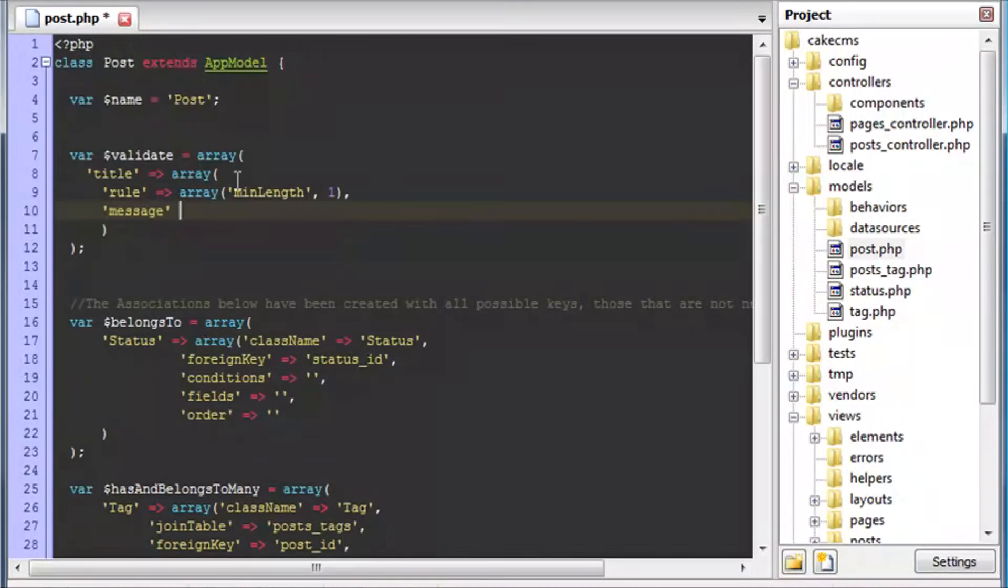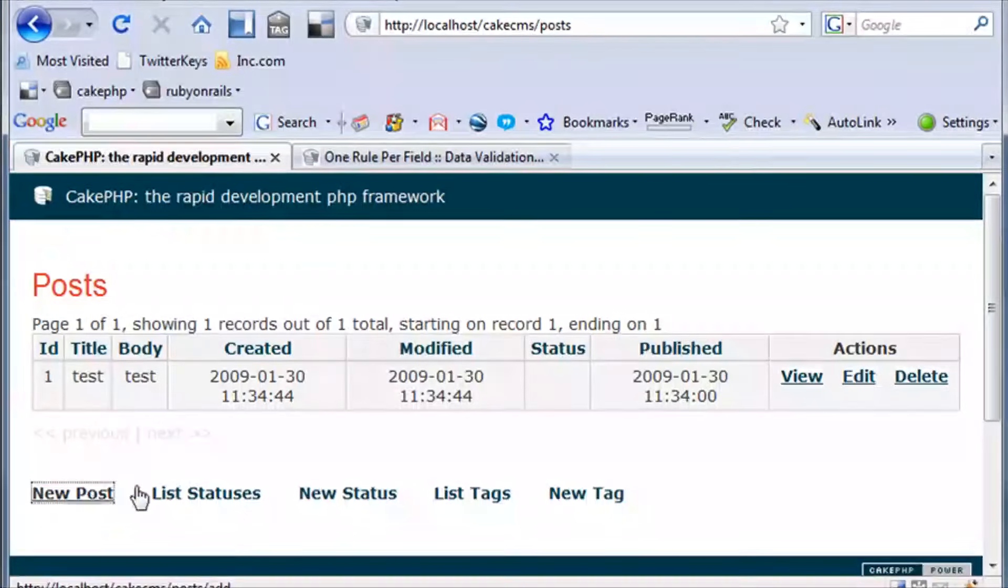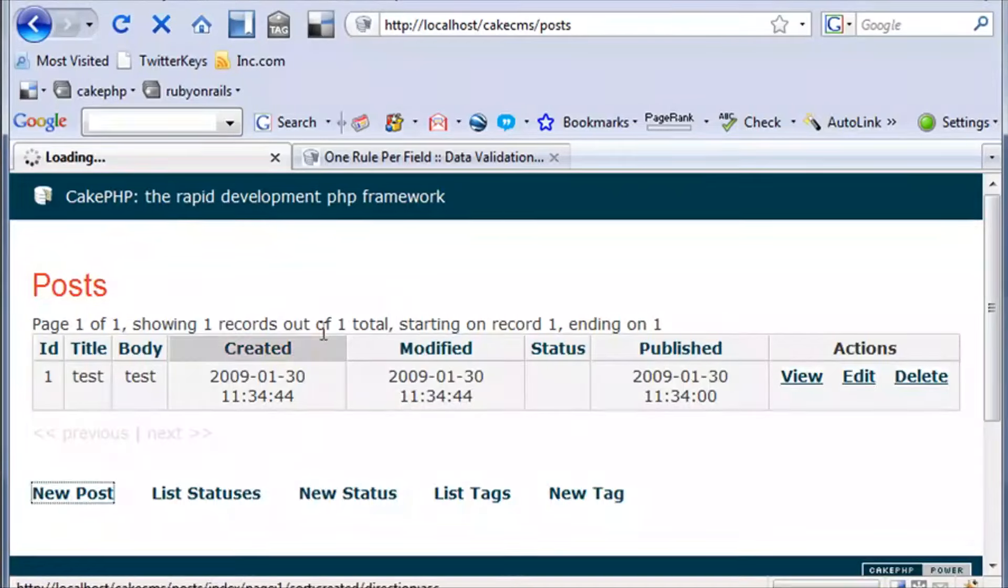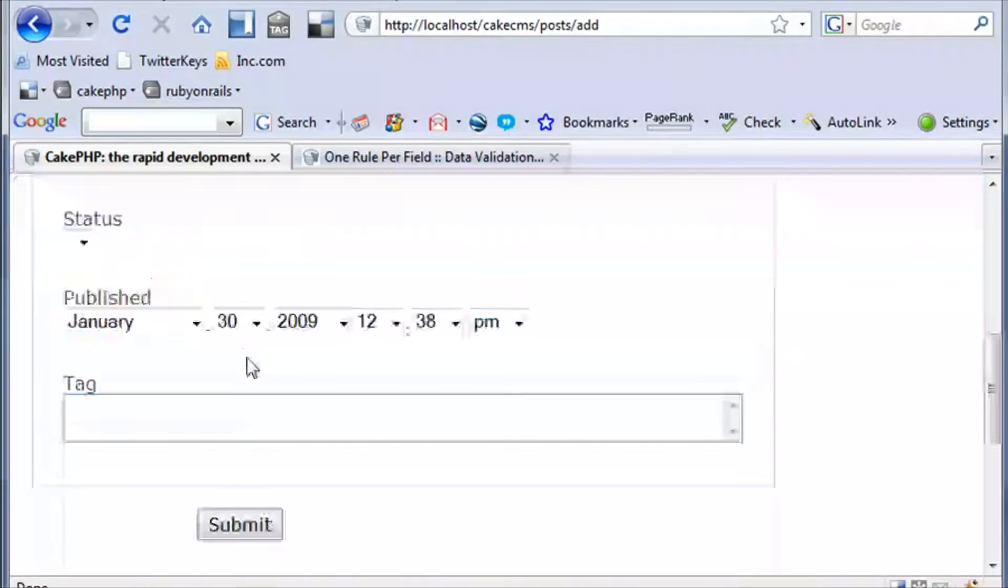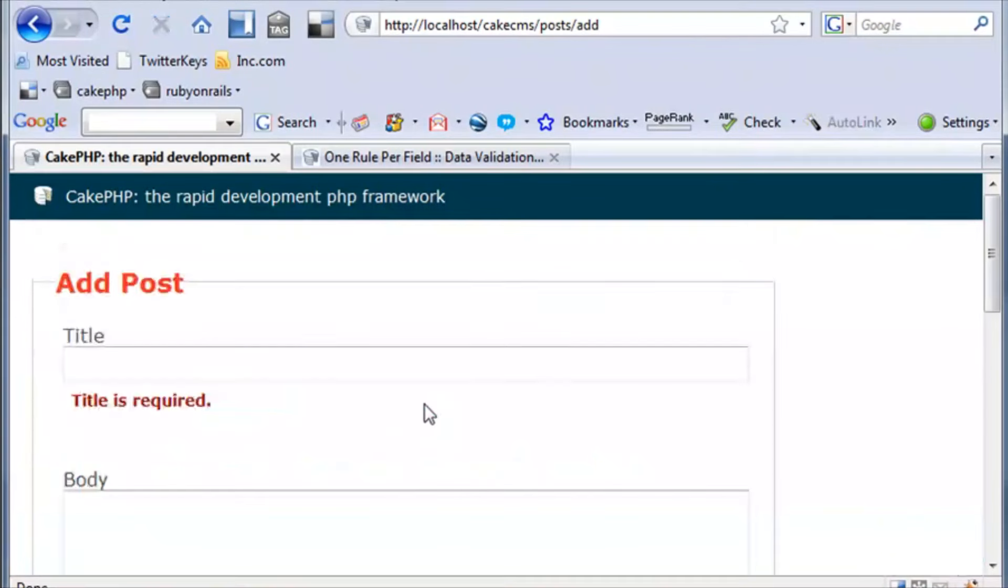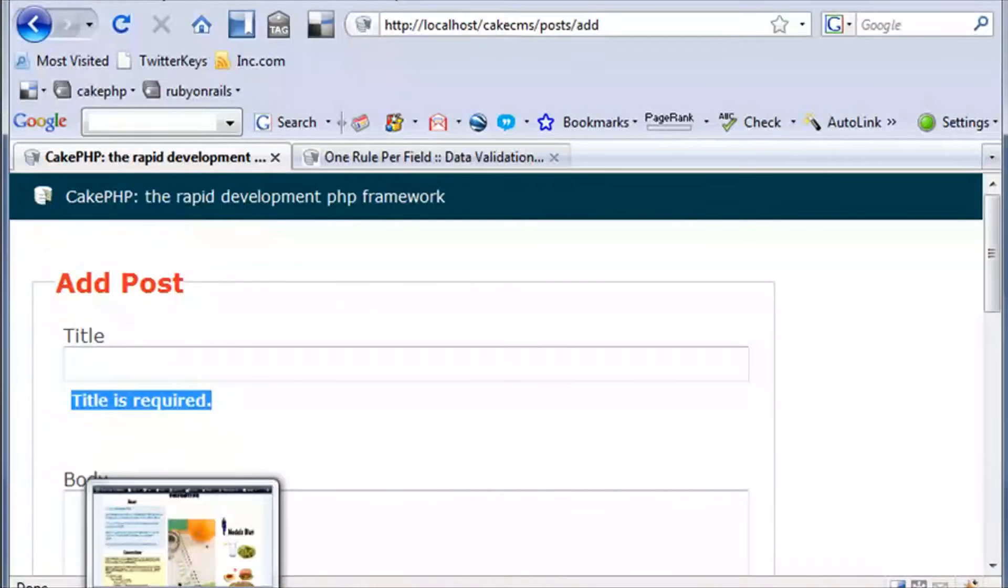And just inside this array we want to throw in some rules. So I'm going to throw in the rule to validate for the min length. And we're going to say min length of one. And then I'm going to say the message we want to say. So we'll say title is required. We hit save there. And we come back into our application now. We try and post in a new post. And we don't put in a title. You'll see that we get an error message. And we get the message back from our model.